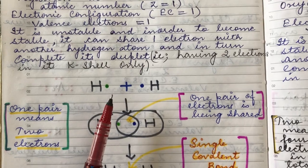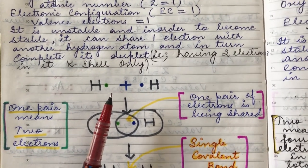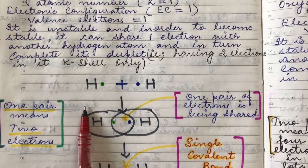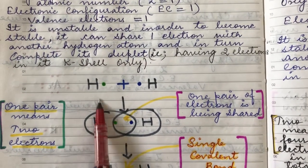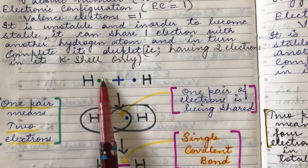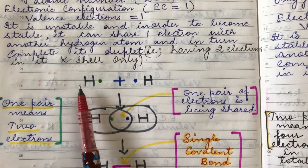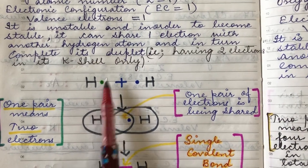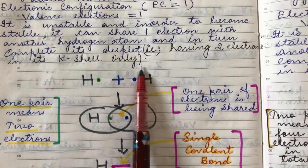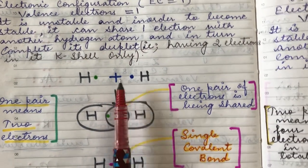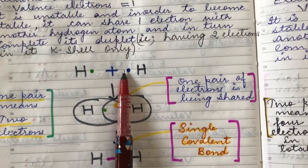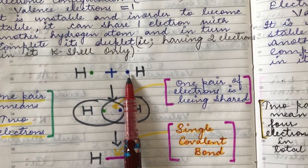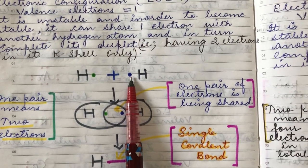To begin, we go step by step. The first step in forming the Lewis structure is to write the Lewis structure of each hydrogen atom, showing only the valence electron — one dot for one valence electron. Since it is unstable, it will bond with another hydrogen atom, so we draw both hydrogen atoms with a plus sign between them, showing each one's valence electron.